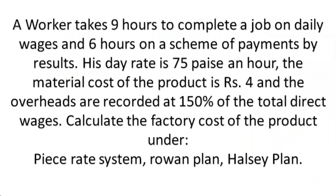A worker takes 9 hours to complete a job on daily wages and 6 hours on a scheme of payments by results. His day rate is 75 paisa an hour. The material cost of the product is rupees 4 and overheads are recorded at 150% of the total direct wages. Calculate the factory cost of the product under piece rate system, then Rowan plan and Halsey plan.